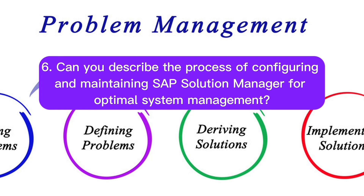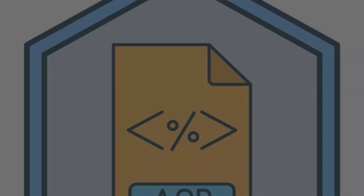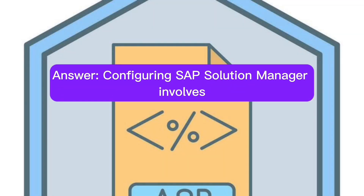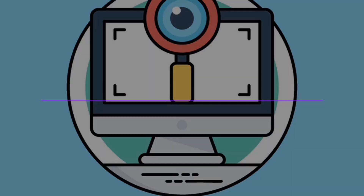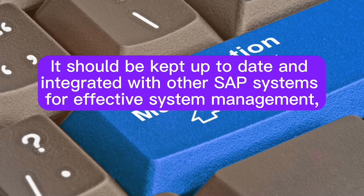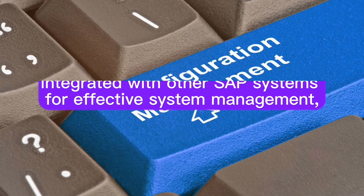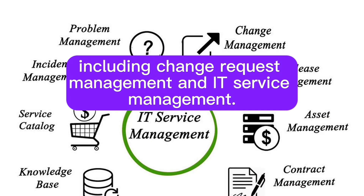Question 6: Can you describe the process of configuring and maintaining SAP Solution Manager for optimal system management? Answer: Configuring SAP Solution Manager involves setting up system monitoring, managing system data, and configuring solution documentation. It should be kept up to date and integrated with other SAP systems for effective system management, including change request management and IT service management.